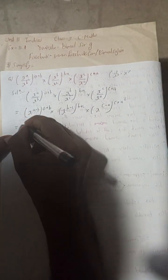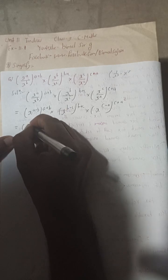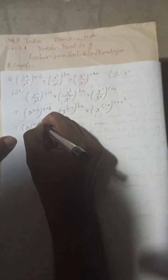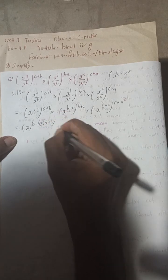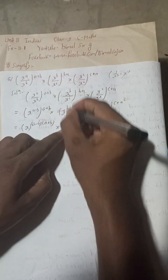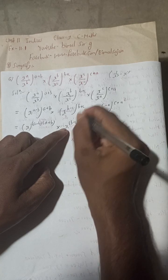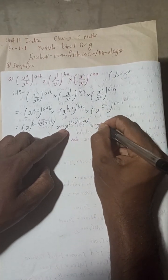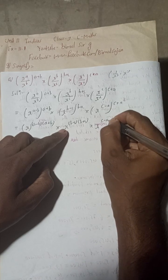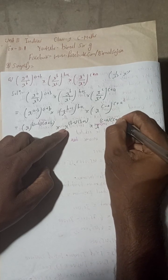This can be written as x^(a-b) to the power (a+b), in the same way x^(b-c) to the power (b+c), and x^(c-a) to the power (c+a).